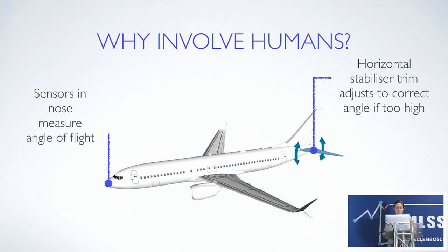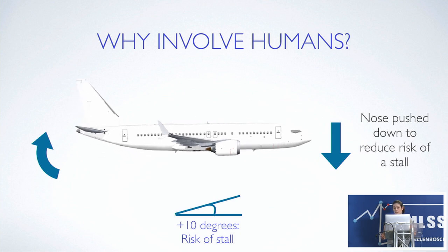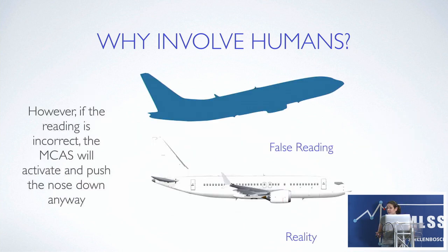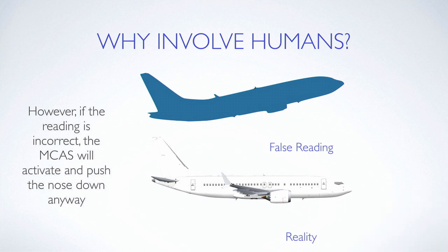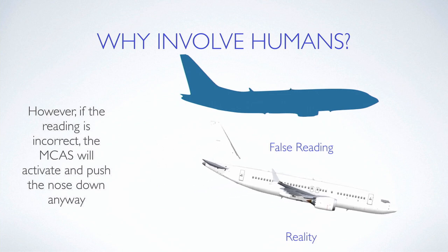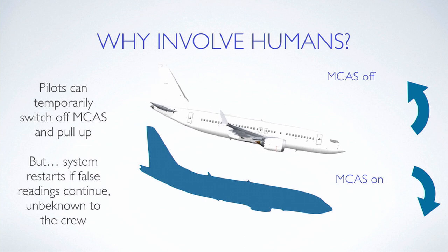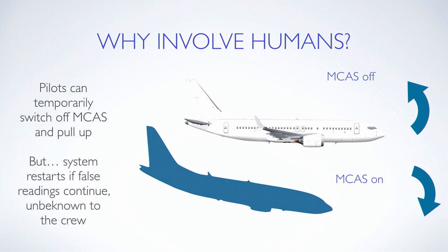The MCAS is a stability system which helps stop the plane from stalling. It has sensors in the nose to measure the angle of flight, which tells the stabilizers in the tail to correct if something's going wrong. If the tail is around 10 degrees lower than the nose, it pushes the nose down to compensate and prevent a stall. But if the reading is wrong — caused by a faulty sensor — the MCAS may activate and push the nose down anyway. When it thinks it's correcting the problem, it's actually sending the plane into a nosedive. Pilots can temporarily turn the MCAS off and pull the plane back up, but the system restarts if false readings continue — if the sensor is completely broken and the crew doesn't realize it, it will keep pushing the nose down.